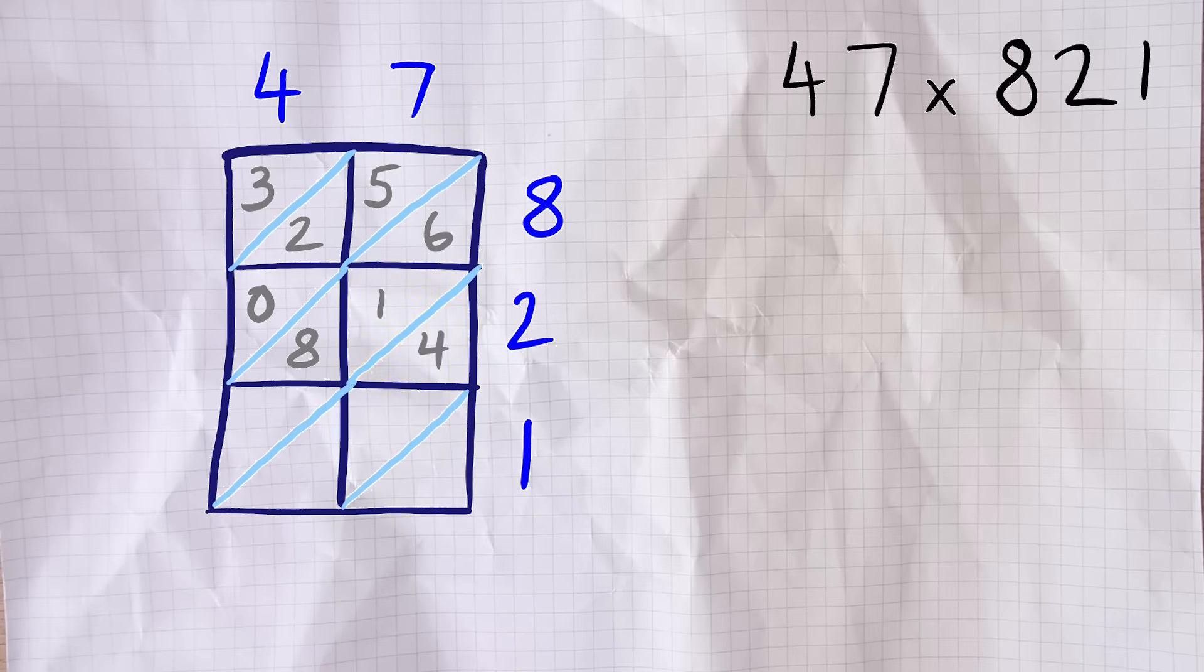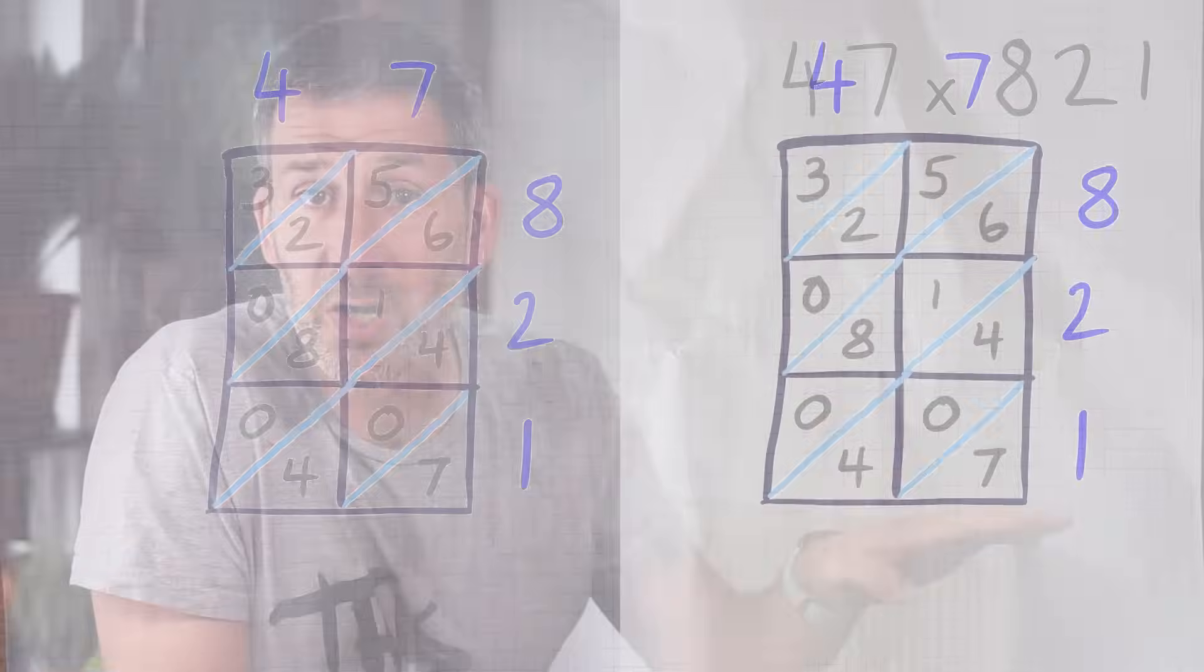The next one is 7 times 2 which is 14. We're on to the third row: 4 times 1 is 4. The answer is just one digit again so we put a 0 in at the start: 0, 4 like that. And the final box is 7 times 1 which is 7. Same thing again, we'll write in the 0 followed by 7. So that's stage 2 done.